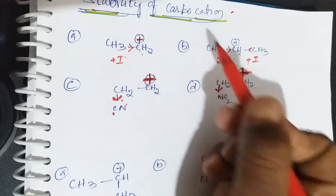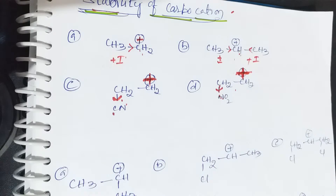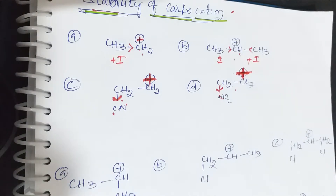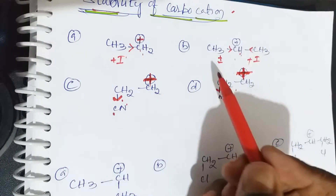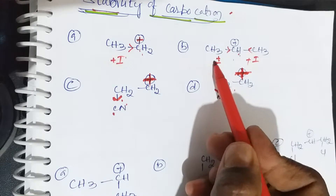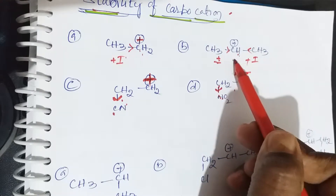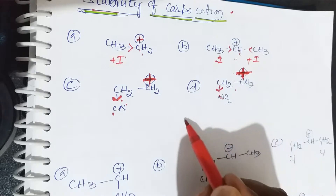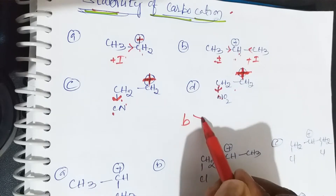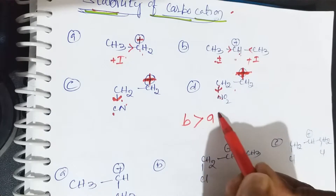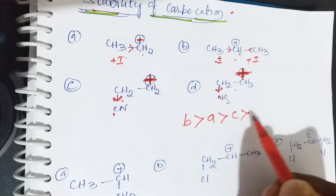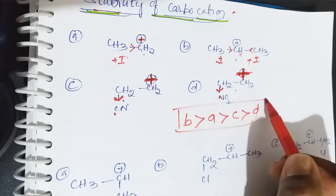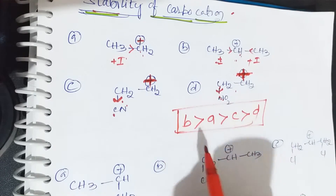The stability of carbocation means positive charge should be less on carbon — that is the more stable carbocation. So the decreasing order of stability is: B > A > C > D.